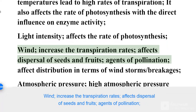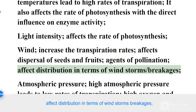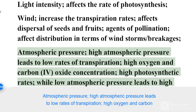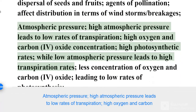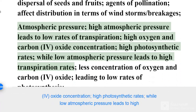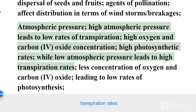Wind affects dispersal of seeds and fruits, and acts as an agent of pollination. It affects distribution in terms of windstorms and breakages. Atmospheric pressure: high atmospheric pressure leads to low rates of transpiration, high oxygen and carbon dioxide concentration, and high photosynthetic rates. Low atmospheric pressure leads to high transpiration rates.